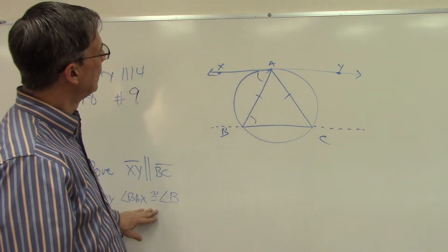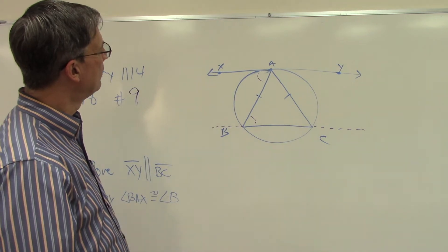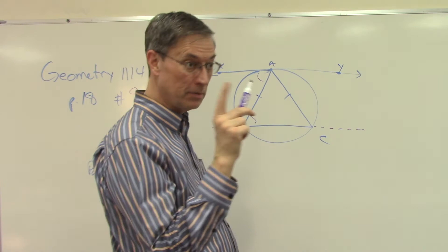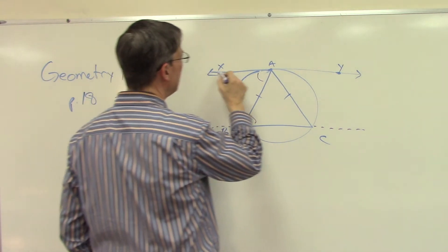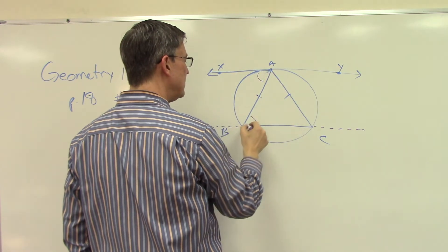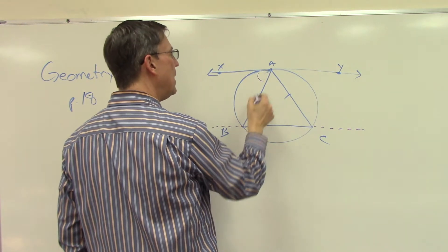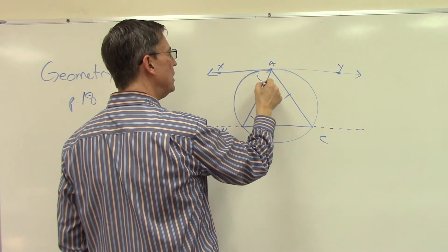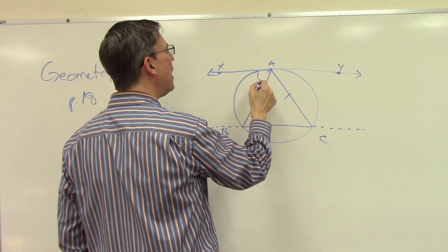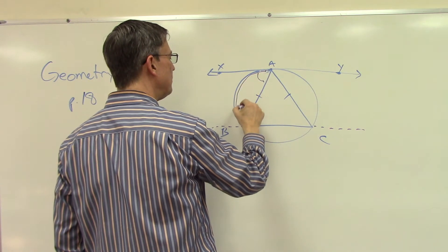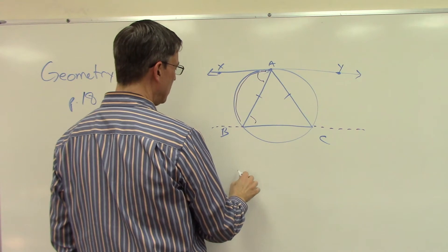Let's see if we can get there. One of the things that we know from theorem 58 is we have a tangent line, it's tangent at this point, we have the secant drawn. And so that means that this angle right here is going to be equal to half of this intercepted arc.